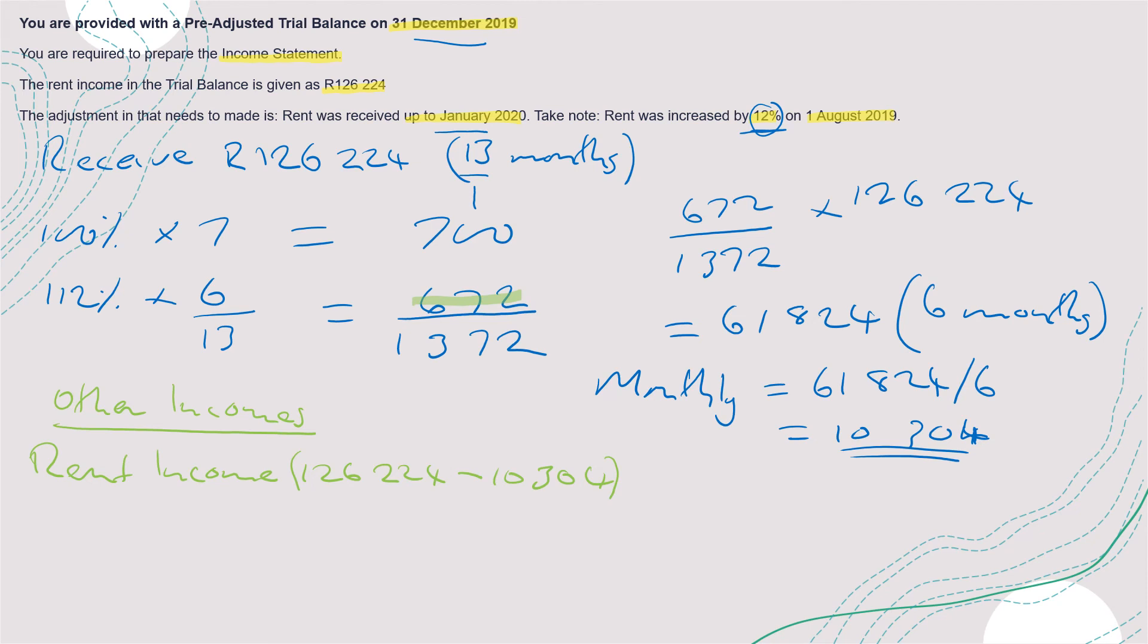Which gives you 115,920. So that will be the adjustment that you make. Of course we have other incomes like discount received, commission income, debt recovered and other income that you may have.